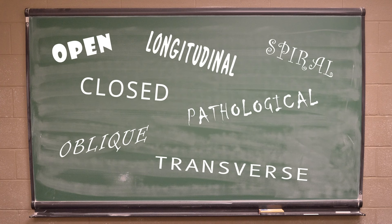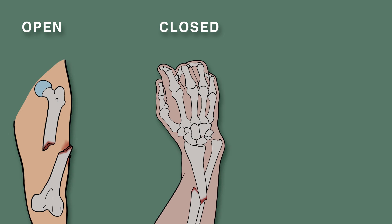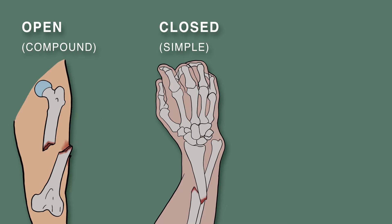Bone fractures can be described by a number of terms. A fracture can be open or closed, also called compound or simple fractures, respectively. An open fracture is one in which the bone breaks through the skin, or a deep wound exposes the bone. A closed fracture does not break the skin.